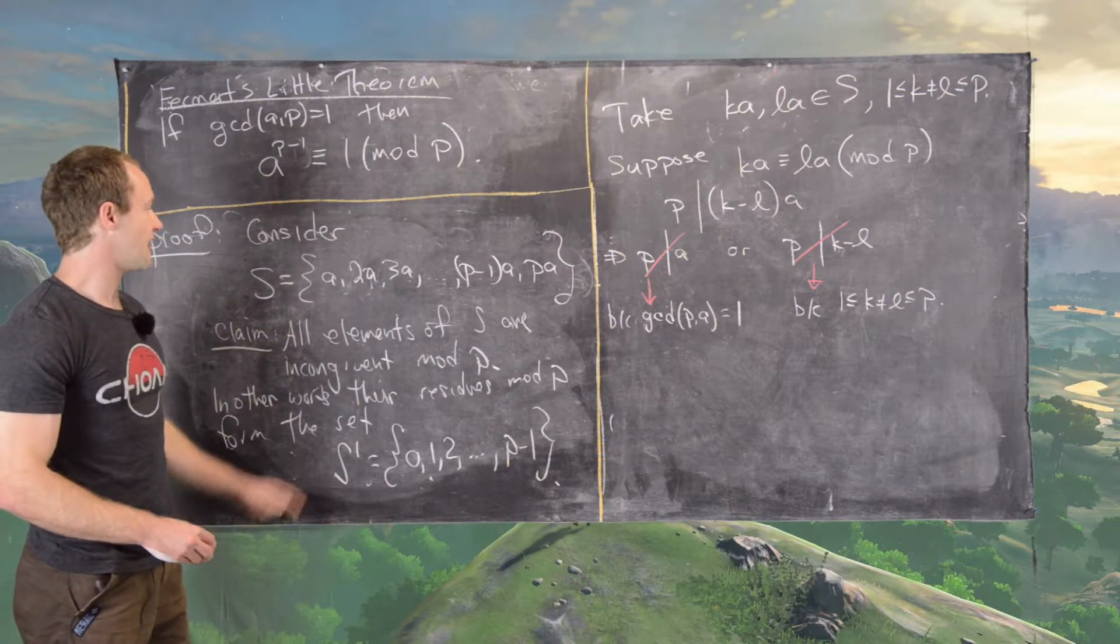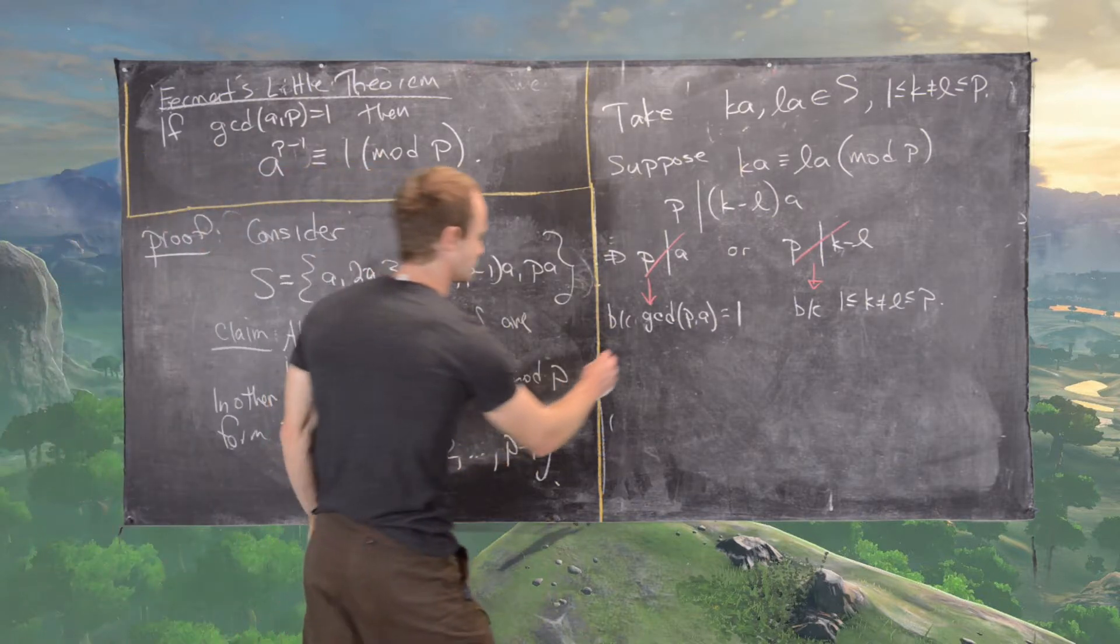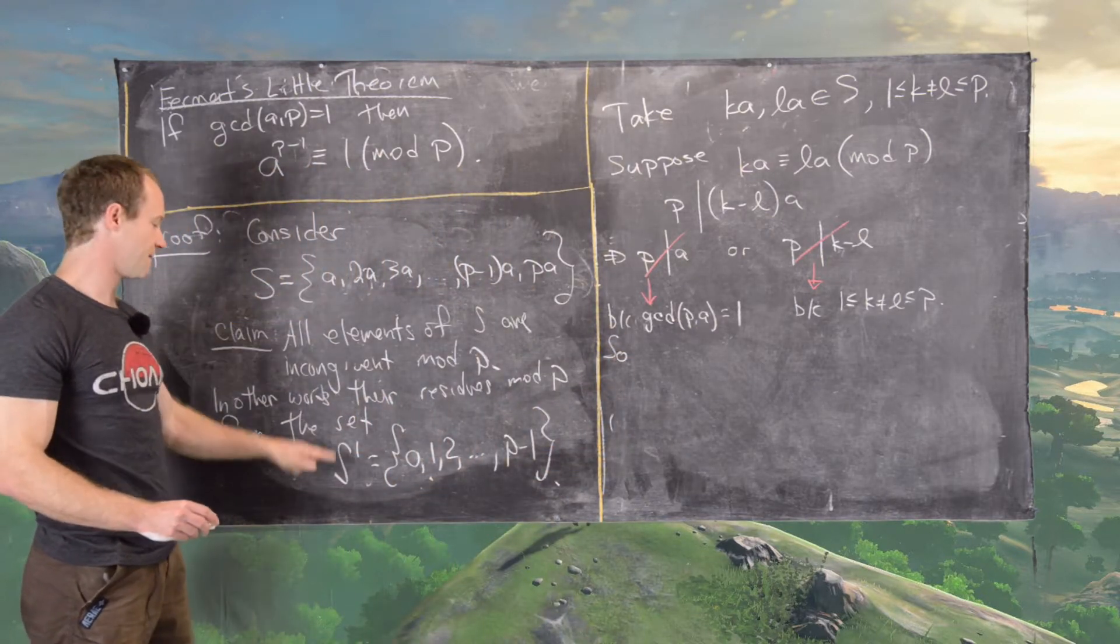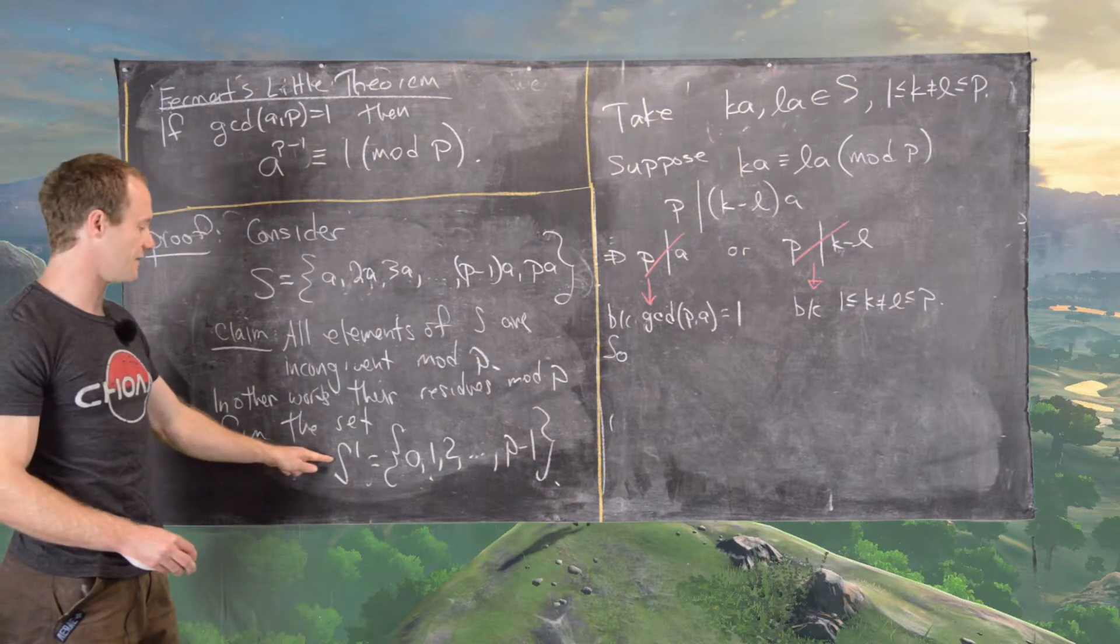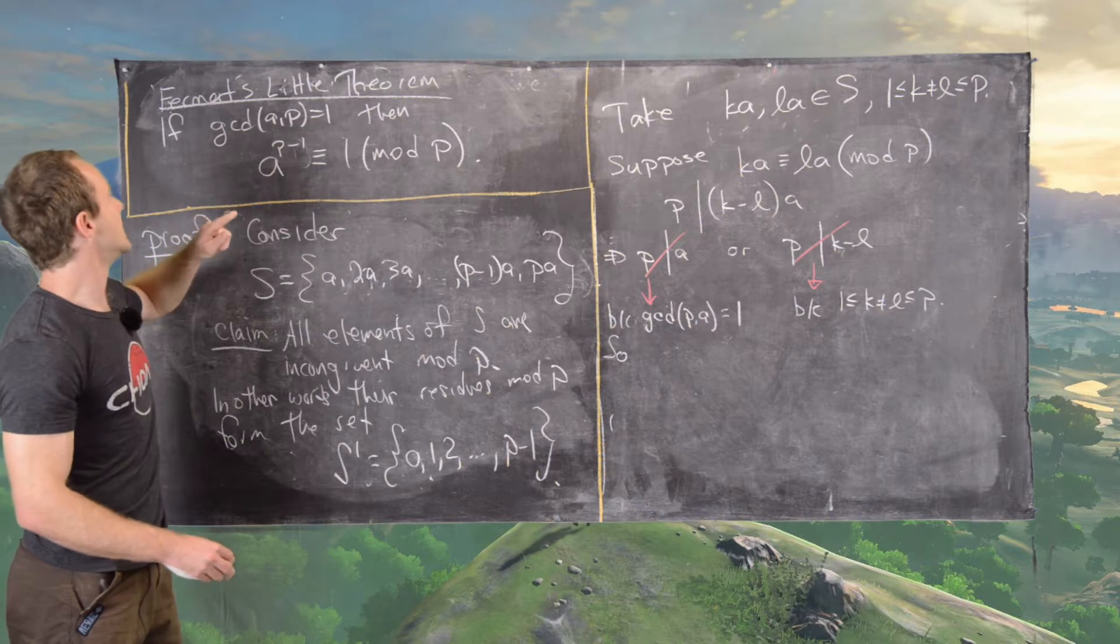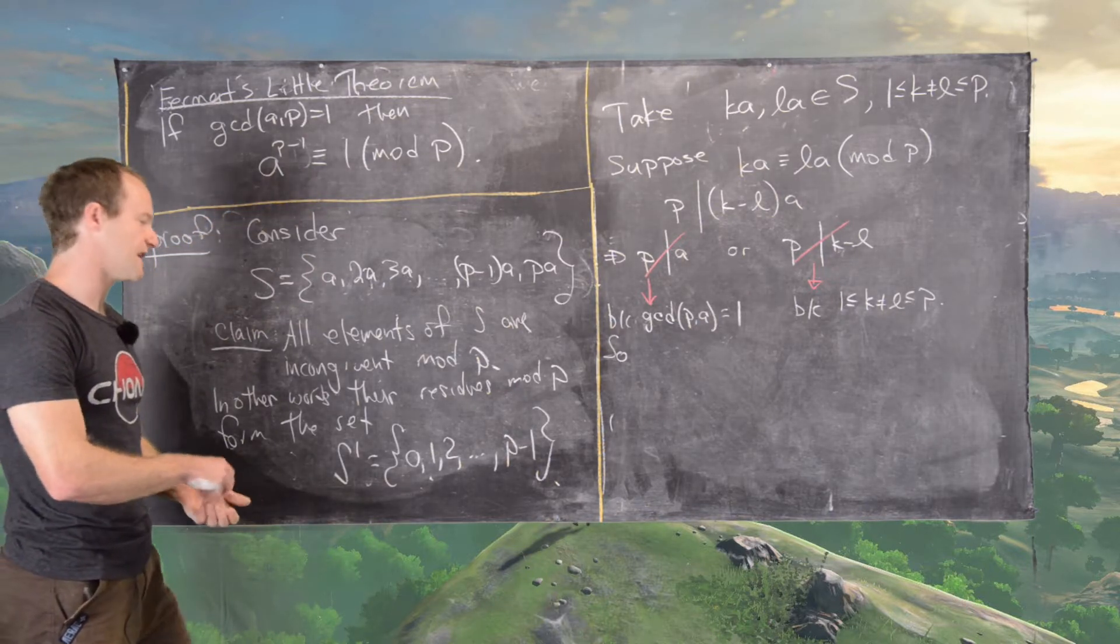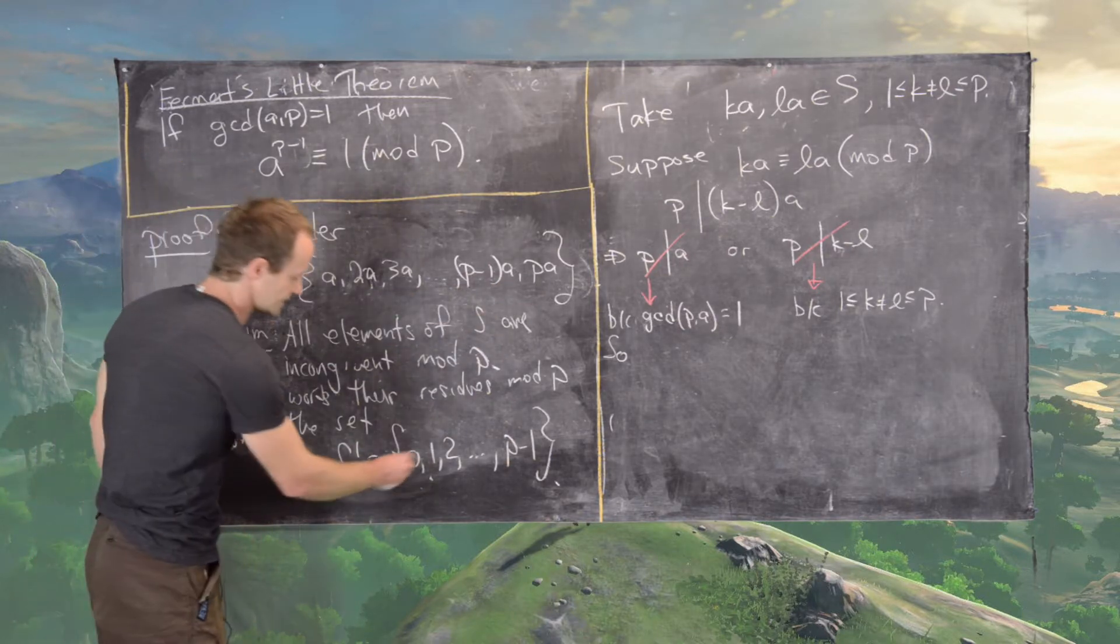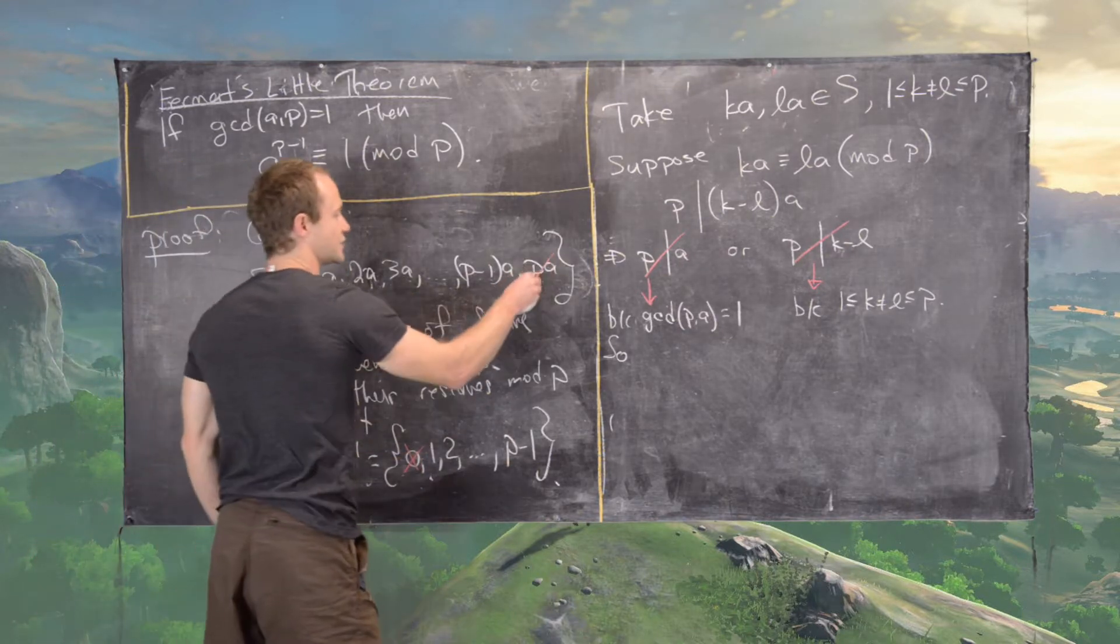Which tells us that if we take the product of all of the elements of S and the product of all of the elements of S prime, mod P, we should get the same thing, but that's not super interesting because 0 is one of the terms.